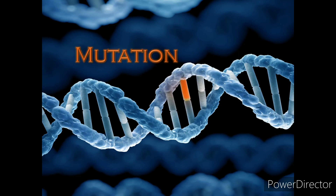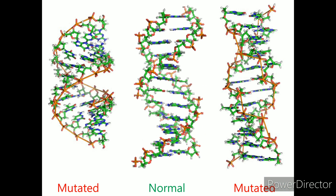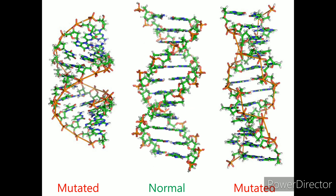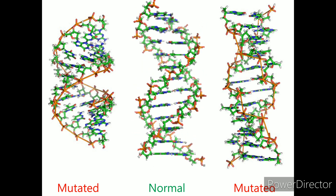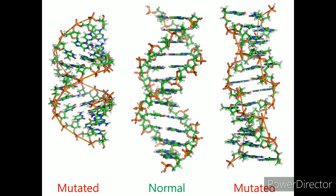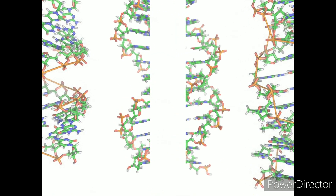Mutation. Mutations are random changes that occur within the sequence of bases in DNA. They can be large scale, altering the structure of the chromosomes, or small scale, where they only alter a few or even a single base or nucleotide.